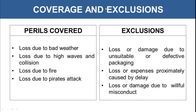Now let's see the coverages and exclusions in marine insurance. The perils covered are: loss due to bad weather — when there is a voyage going on, bad weather can cause destruction and damage to goods; loss due to high waves and collision with another ship or any other object; loss due to fire; and loss due to pirates' attack. All these perils or risks are covered under a marine insurance policy.